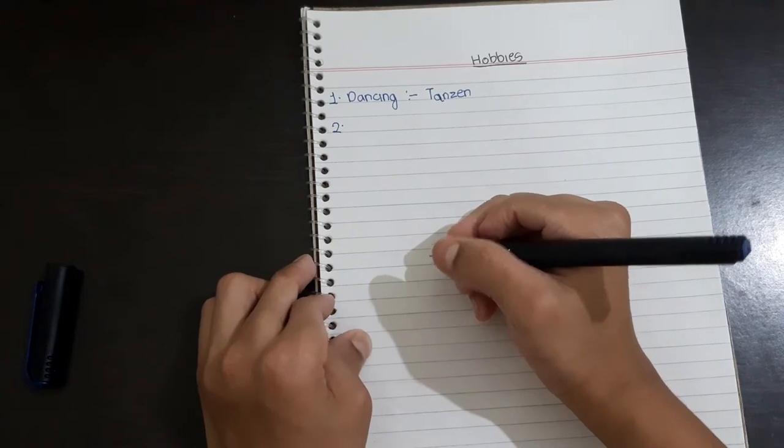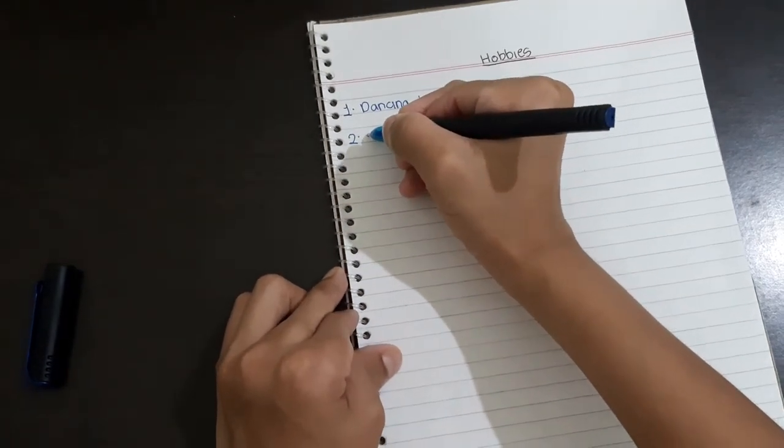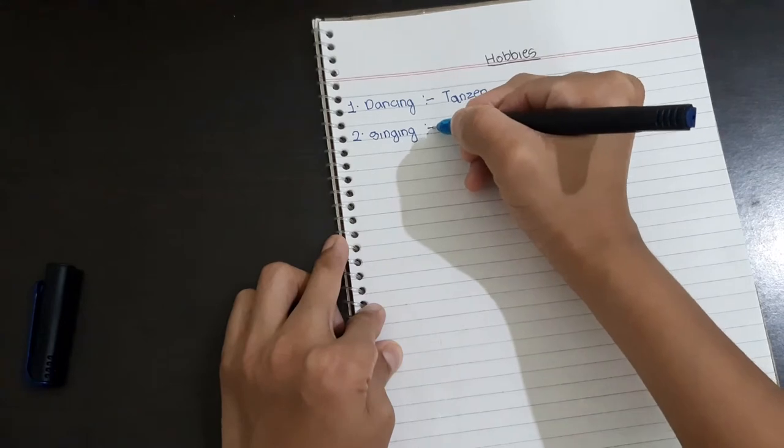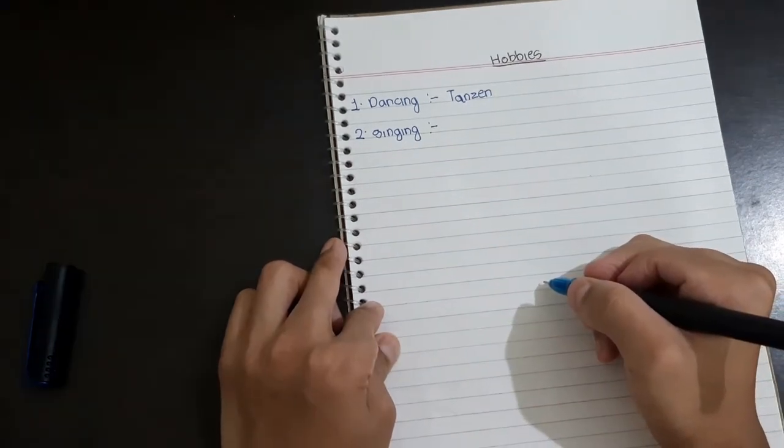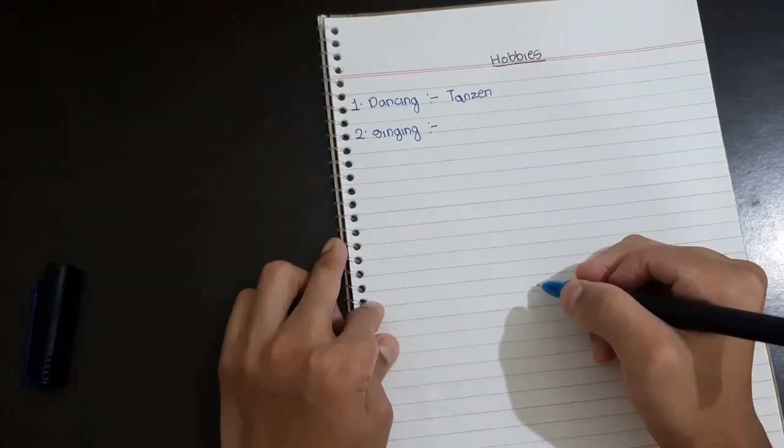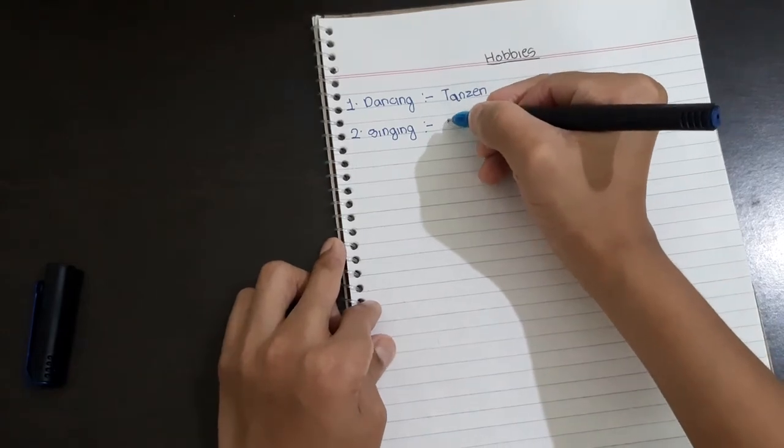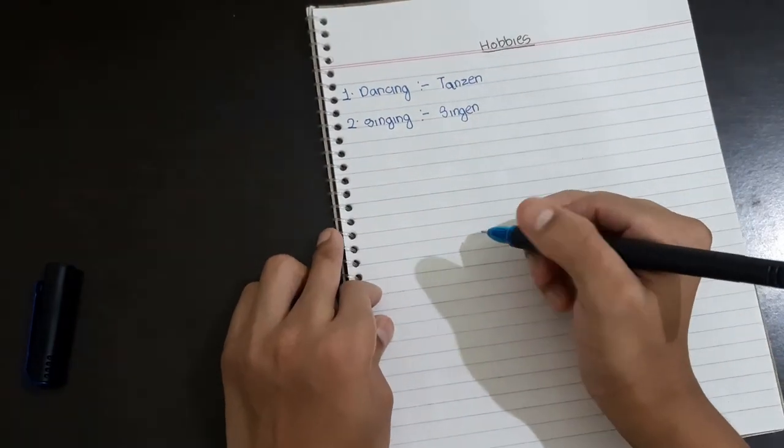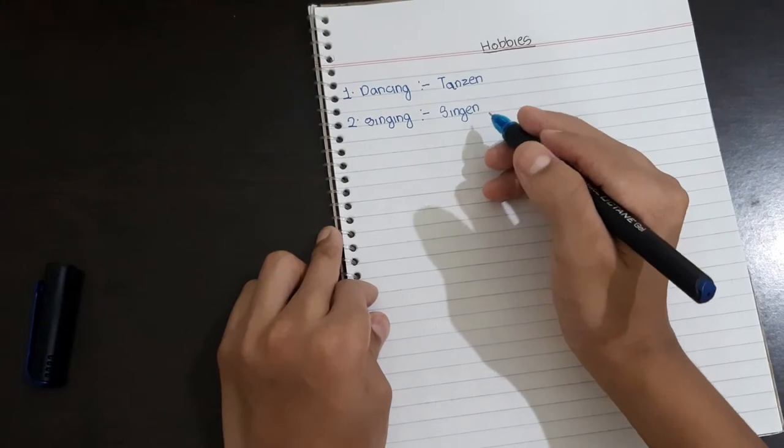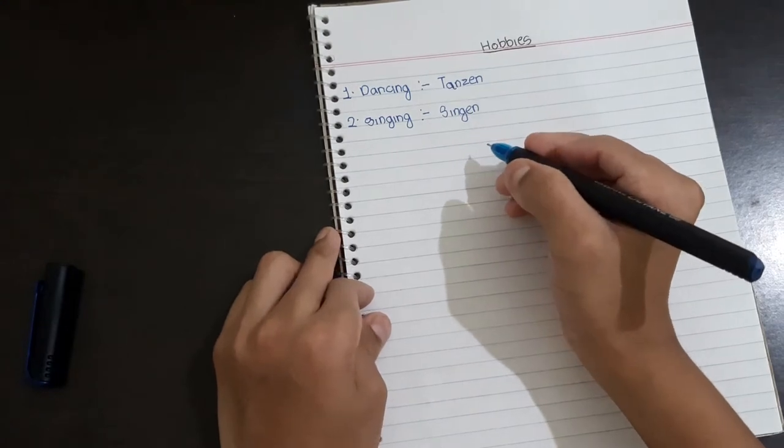Singing. So singing is Singen. The spelling of Singen is S-I-N-G-E-N.